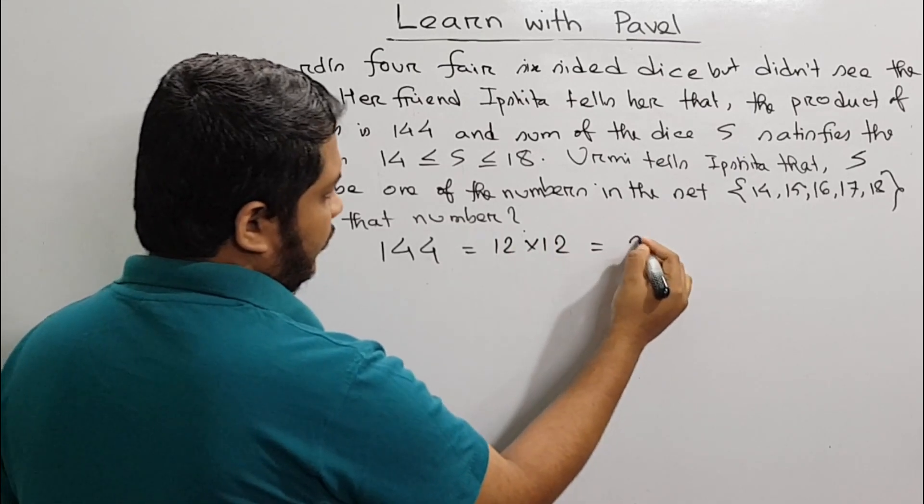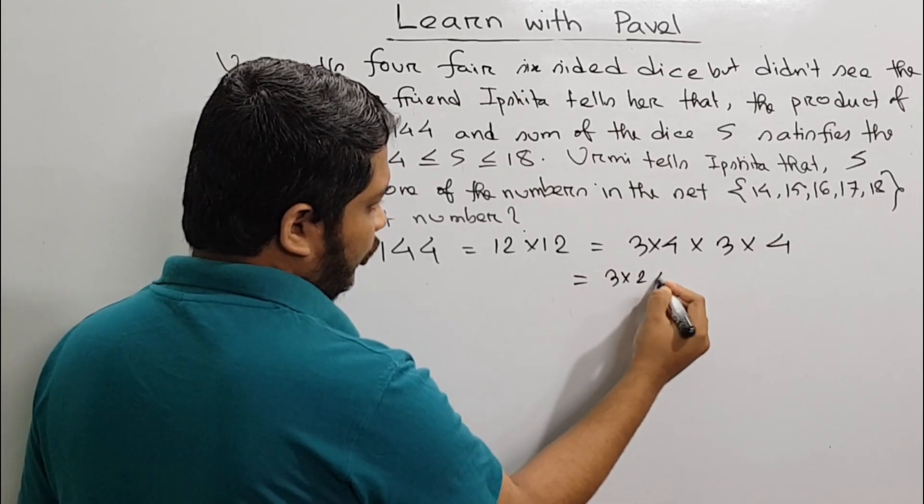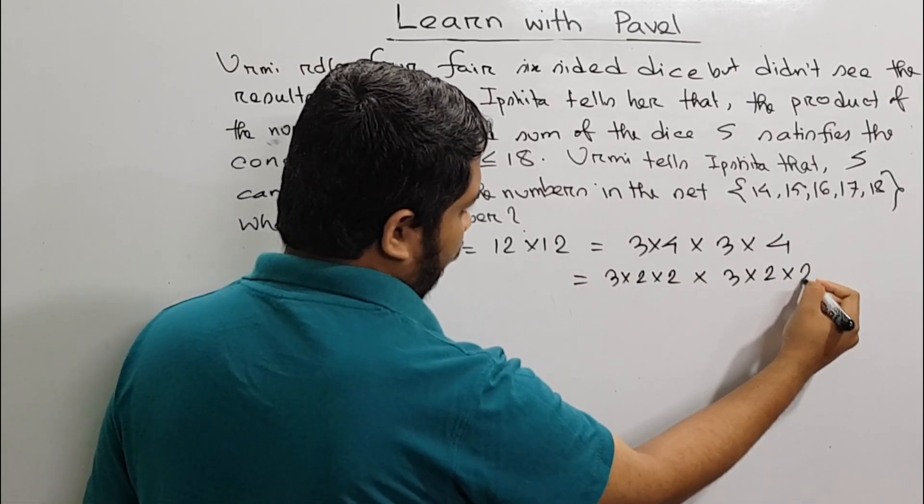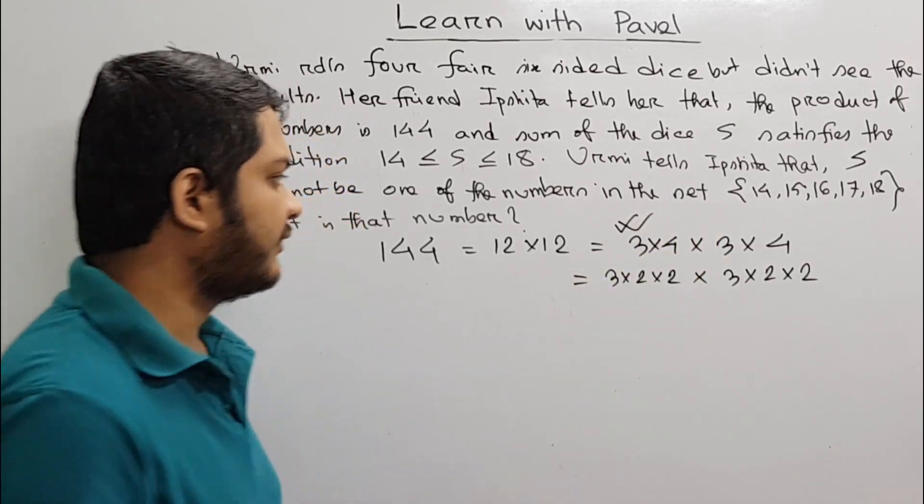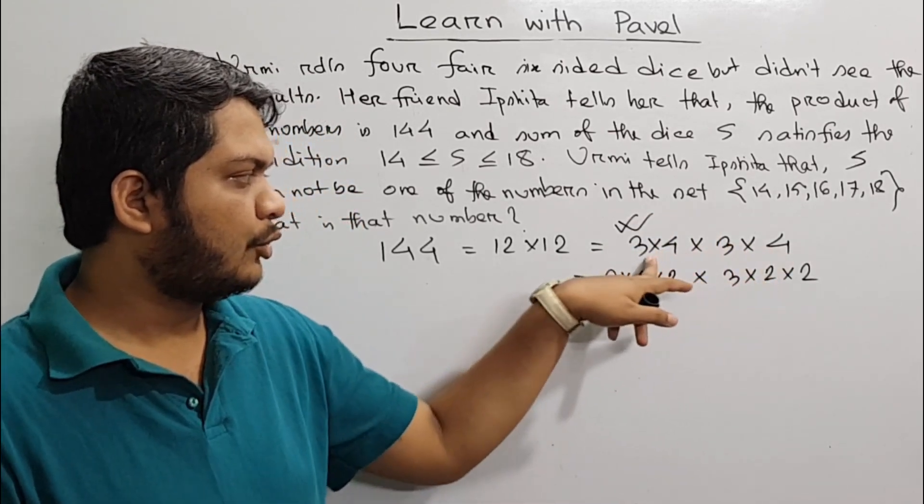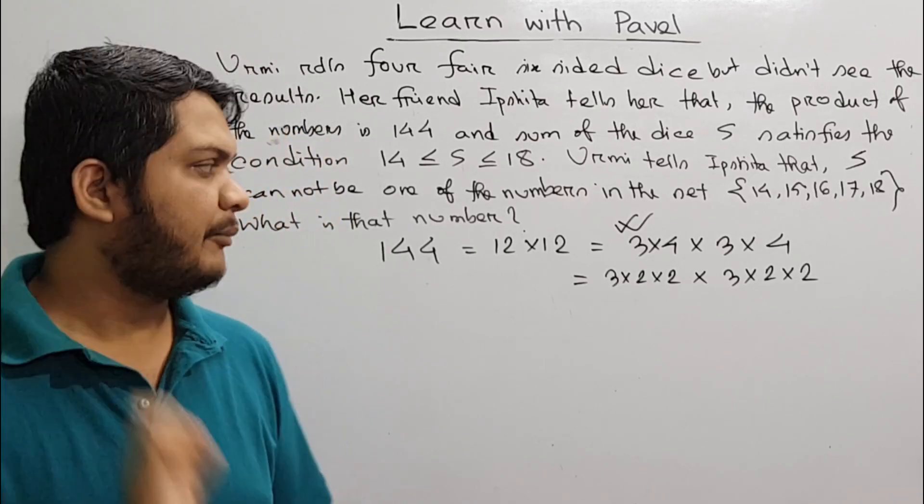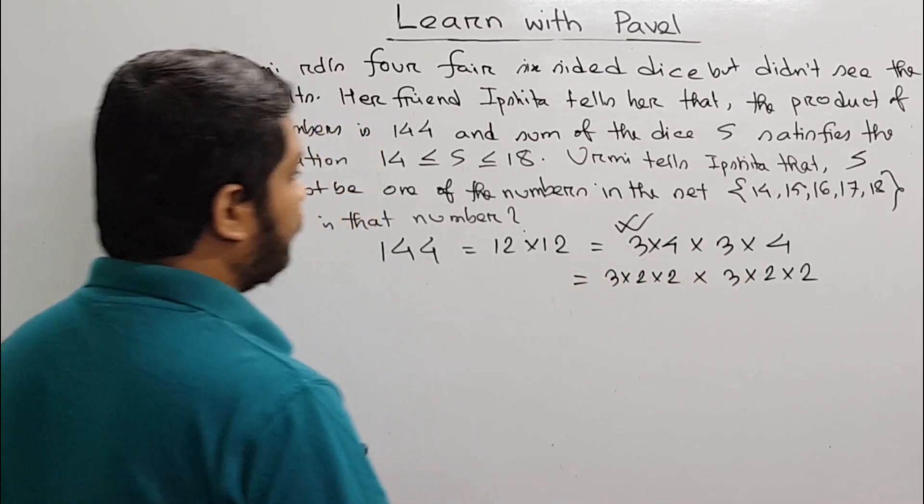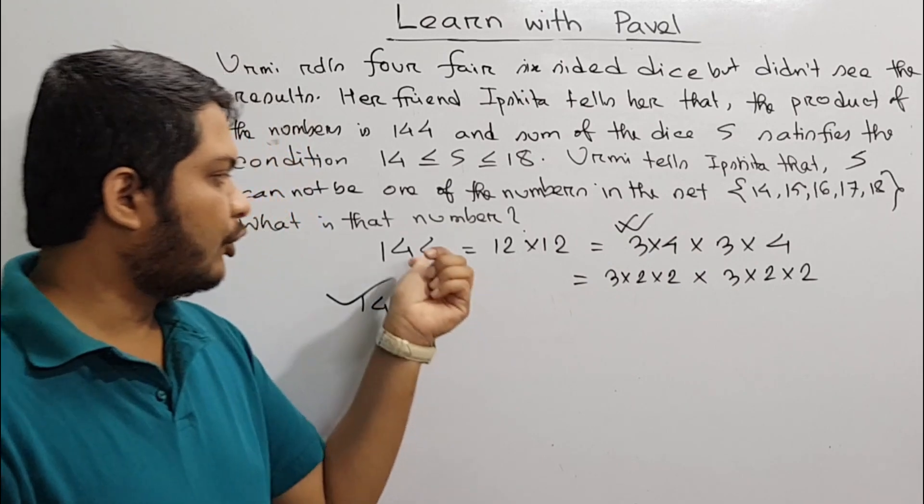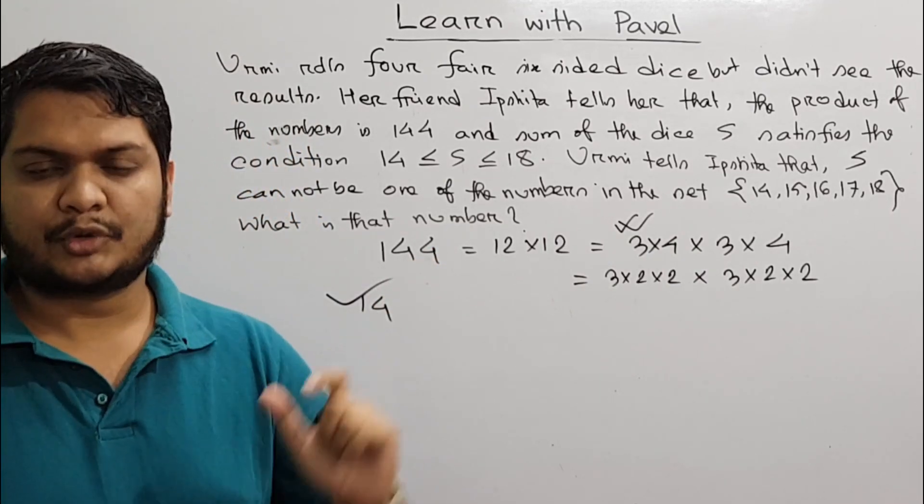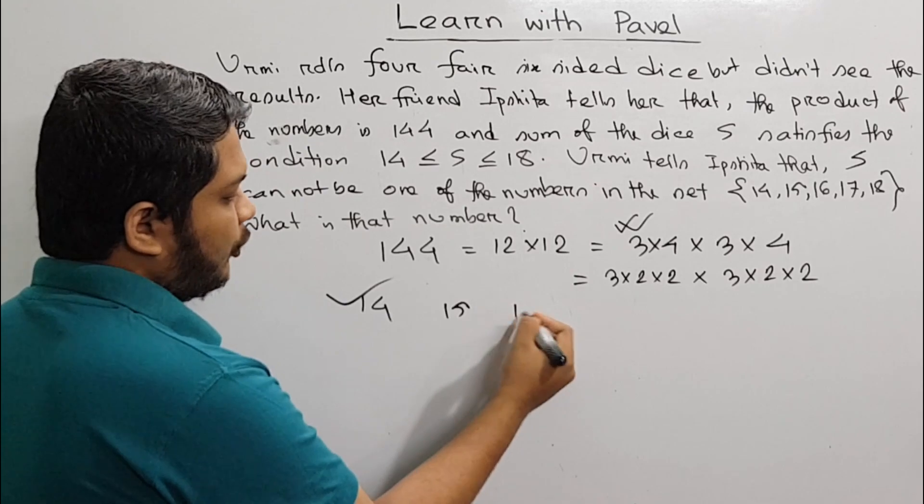So first, let's factor 144. I will write 144 = 12 × 12 = (3×4) × (3×4) = 3×2×2 × 3×2×2. Now, let me try combinations. We have 1, 4. Let me check if we can get 14, 15, 16, 17, 18. But we are able to get 16 and 18, so we will try the same for 15 and 18.